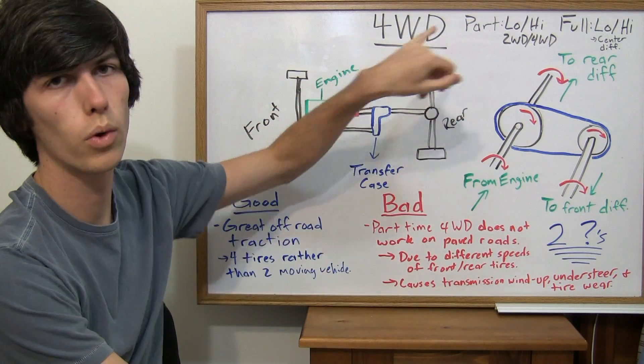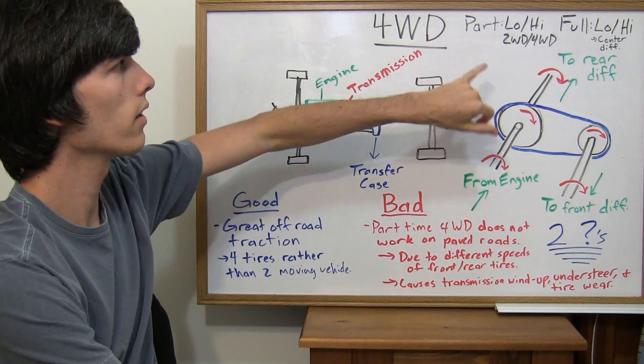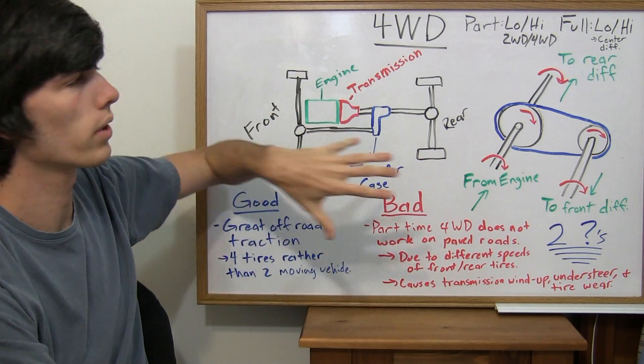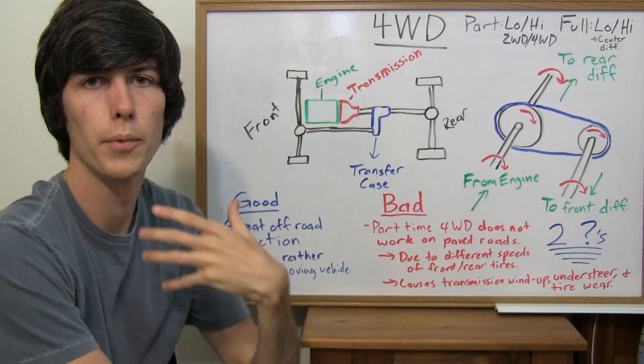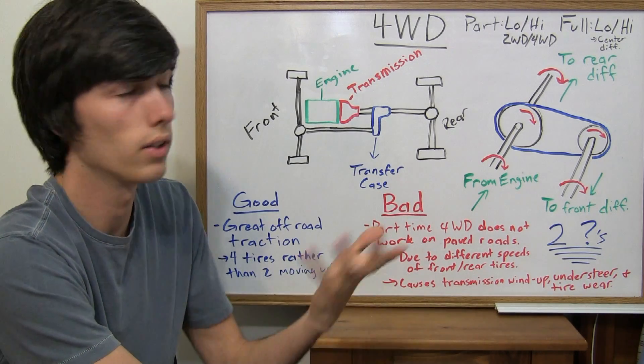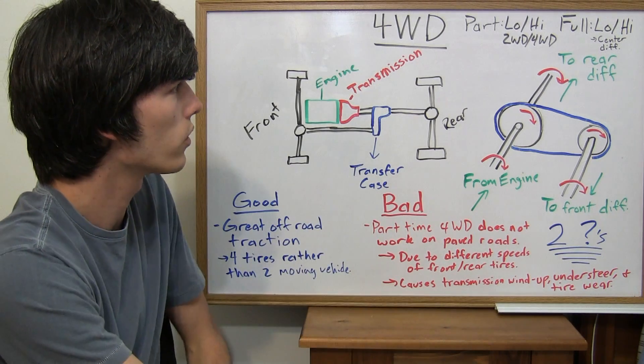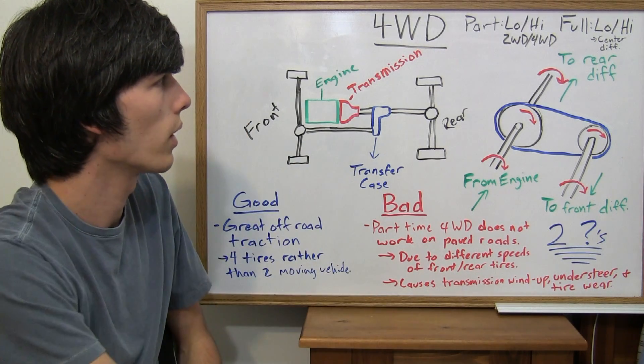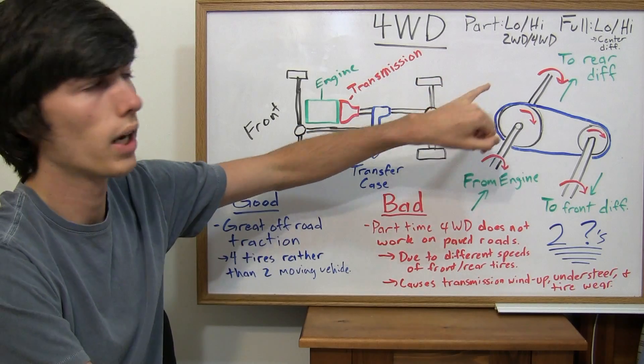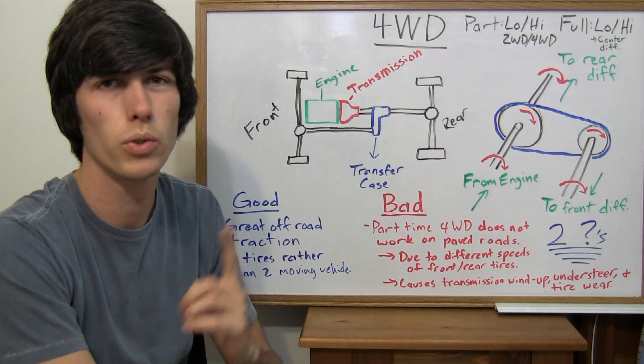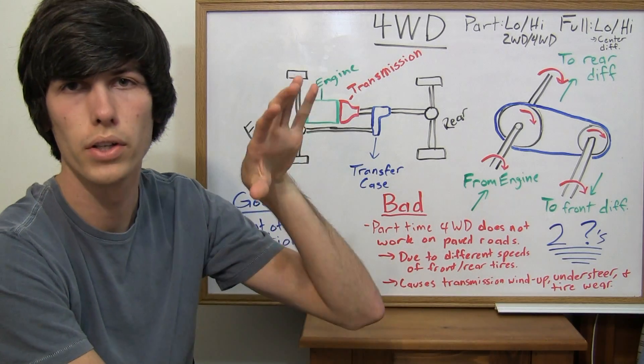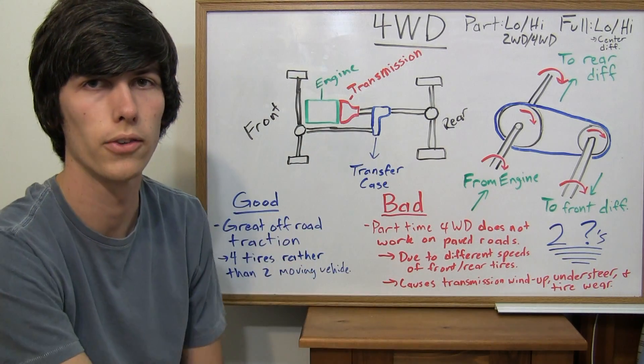For part-time four-wheel drive, this means you have a high gear and a low gear setting in your transfer case. So you can change the overall gearing of your vehicle. You'd go to a lower gear for more torque and you'd stay in a higher gear when you didn't need more torque just for everyday driving and basic off-road situations. Also with part-time four-wheel drive, you have the ability to switch between two-wheel drive and four-wheel drive. So you can drive just the back tires or you can drive the back tires and the front tires.